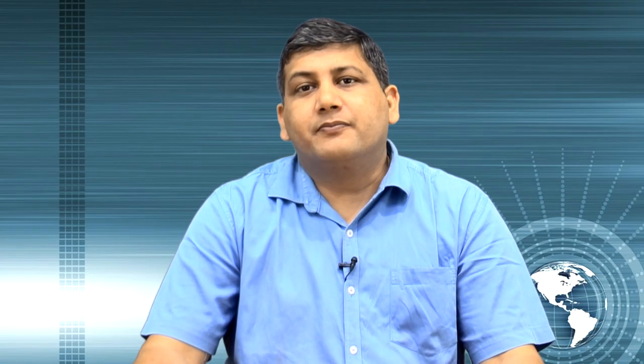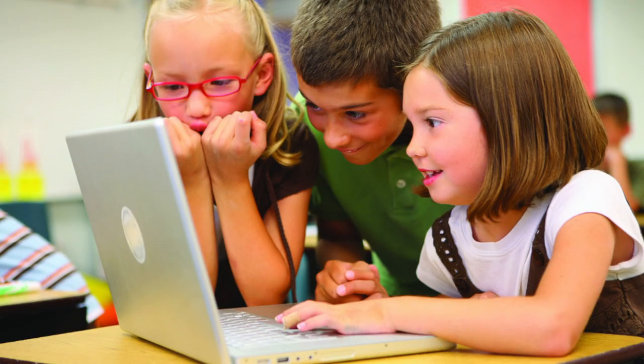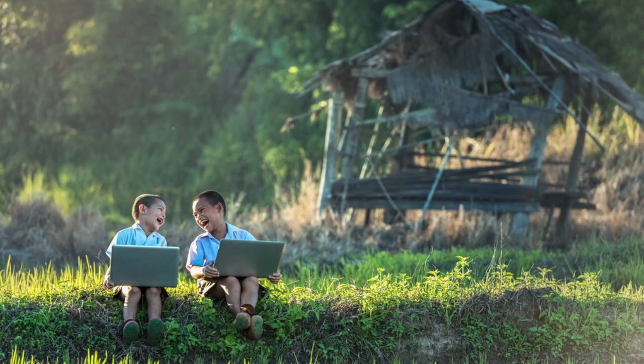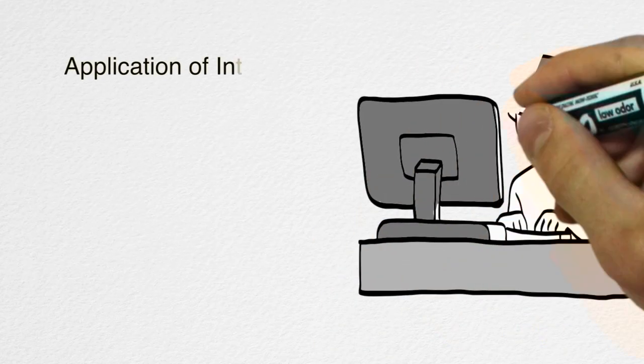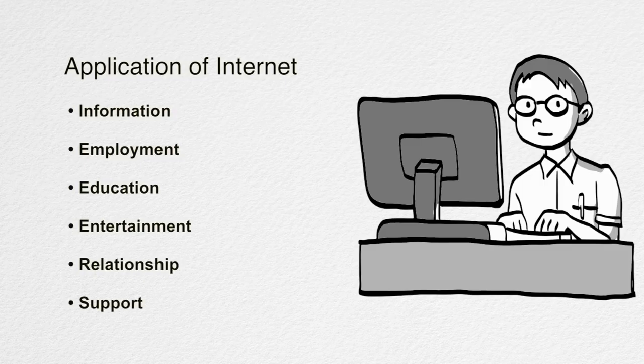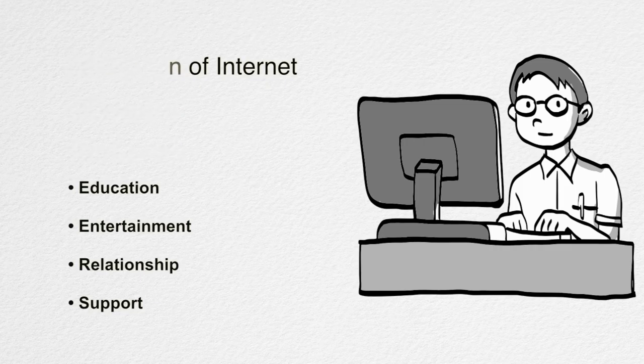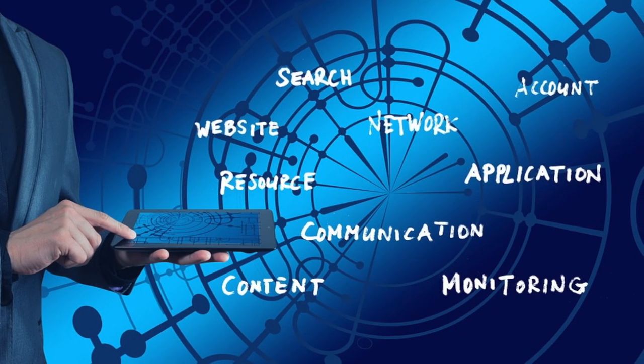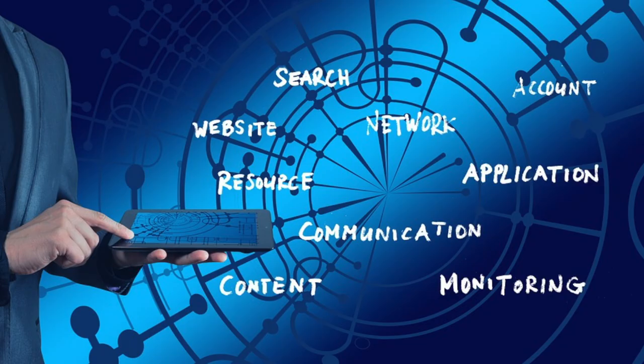The internet has grown so rapidly and become indispensable so quickly that it can be hard to remember that it is still a fairly new medium. Most people use the internet daily for personal and increasingly for business purposes. Children are growing up with online activities as a second nature. Even in rural and lower income communities, opportunities for internet use are spreading. Individuals go to the internet for information, employment, education, entertainment, relationships and support. It has facilitated our life in more than one way. Have you ever wondered from where the internet came? Let us discuss the brief history of internet and learn how it was invented and how it evolved to an extent that now we cannot think of our lives without it.